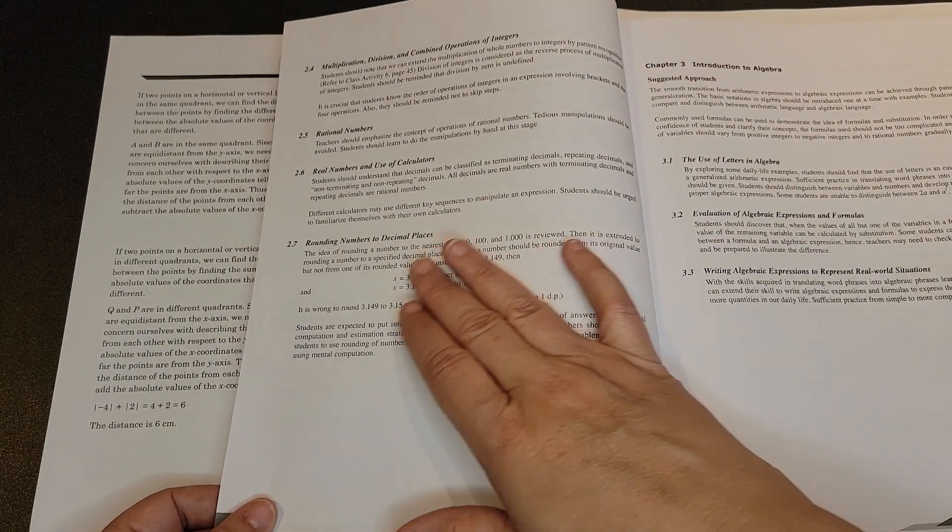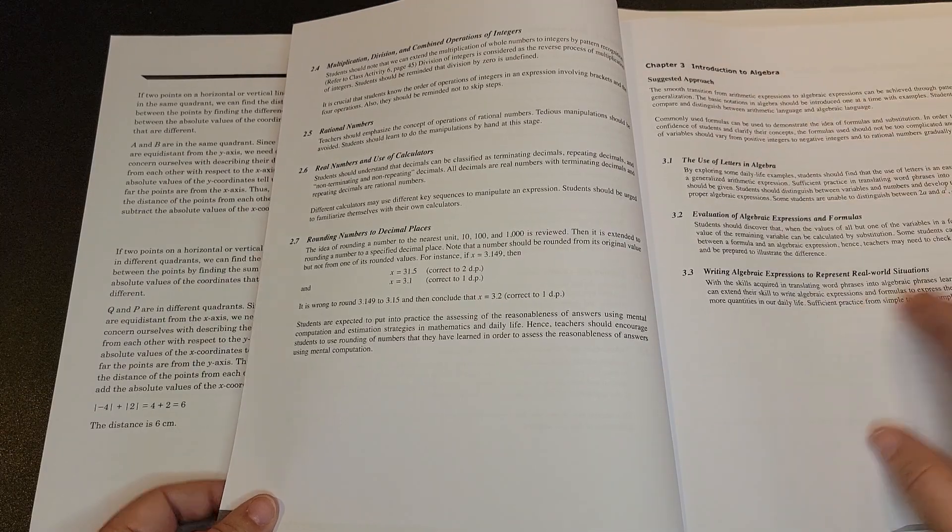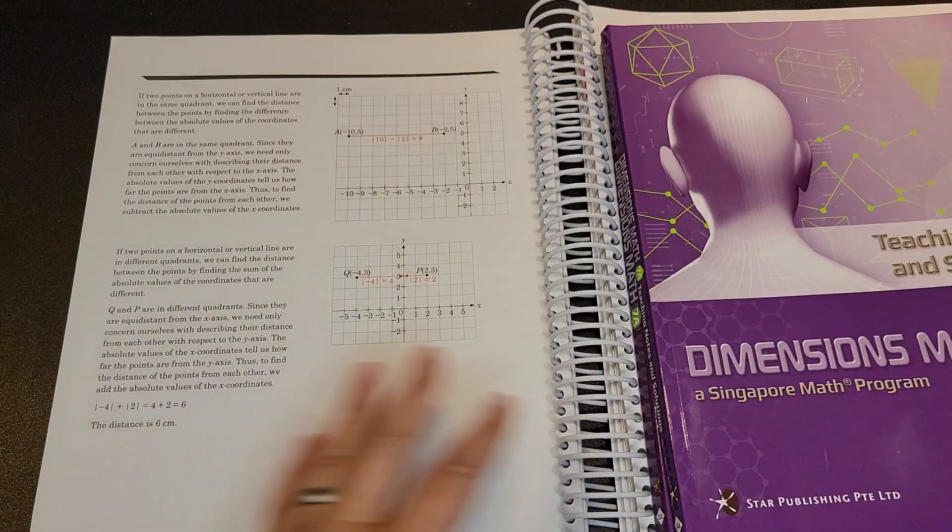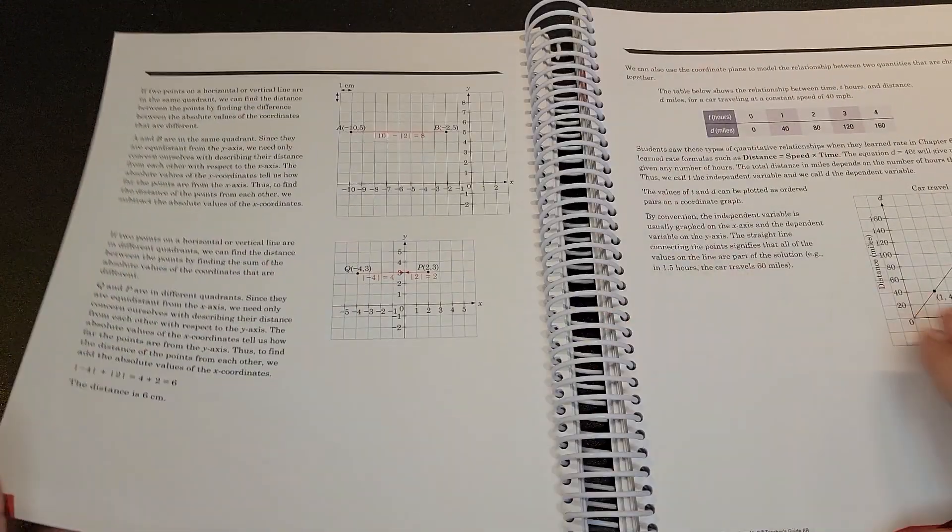So you get two pages for up to 2.7. For chapter three, you get this much, which where you would look at six, you are used to getting all of these pages to help with the teaching.